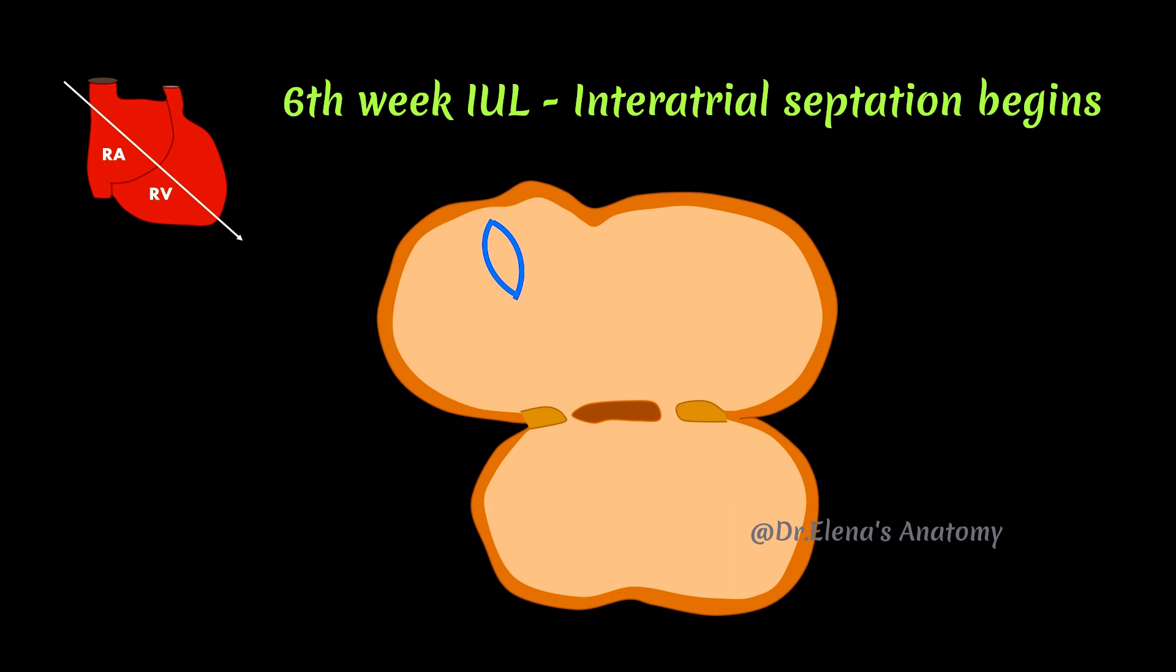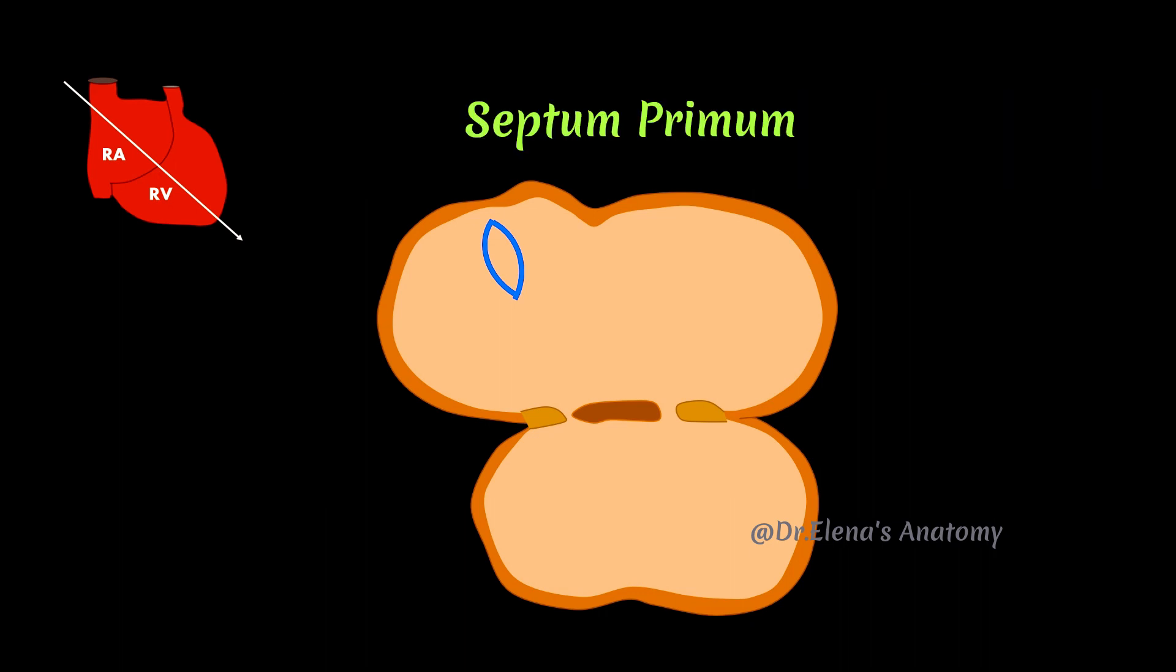During the sixth week of intrauterine life, the internal separation of atrium begins. A sickle-shaped septum arises from the roof and dorsal wall of the primitive atrium. It starts to grow towards septum intermedium. The caudal edge is free and concave and the gap between septum primum and intermedium is known as foramen primum.